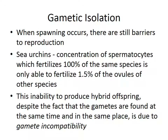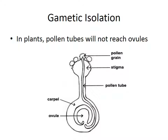The isolation barrier could also be gametic. When spawning occurs, there are still barriers to reproduction. In sea urchins, a concentration of spermatocytes that fertilizes 100% of the same species can only fertilize about 1% of the ovules of another sea urchin species. This inability to produce hybrid offspring despite gametes being at the same time in the same place is due to gamete incompatibility. In plants, pollen lands on top of a plant but only one pollen tube is allowed to reach the egg and fertilize it — the one that grows fastest; the others simply cannot get there.